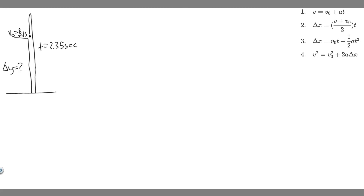In this problem, we're told to calculate the height of a cliff if it takes 2.35 seconds for a rock to hit the ground when it is thrown straight up from a cliff with an initial velocity of 8 meters per second. Part B asks how long would it take for the same rock to reach the ground if it was thrown straight down with the same speed.